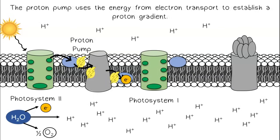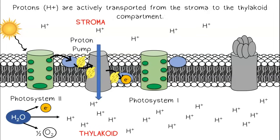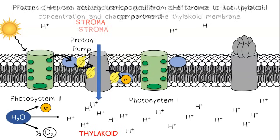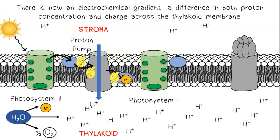The proton pump uses the energy from electron transport to establish a proton gradient. Protons are actively transported from the stroma to the thylakoid compartment. There is now an electrochemical gradient, a difference in both proton concentration and charge across the thylakoid membrane.